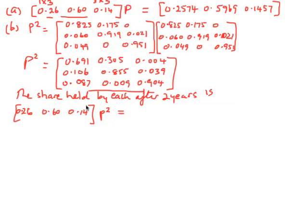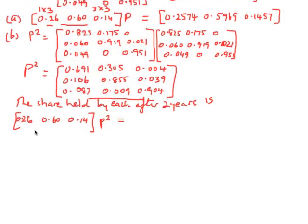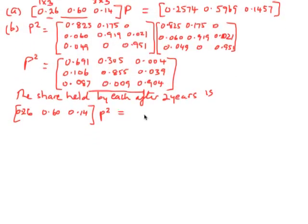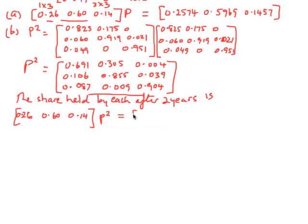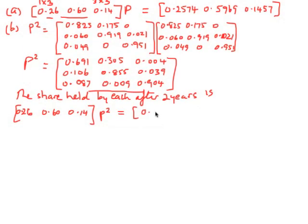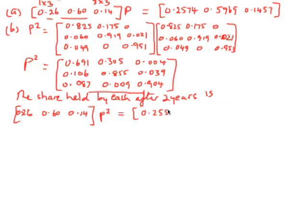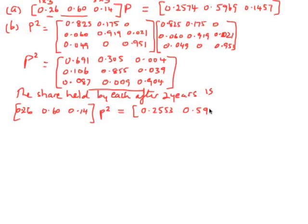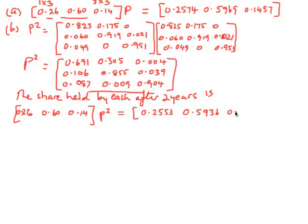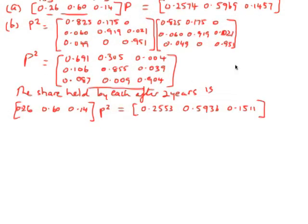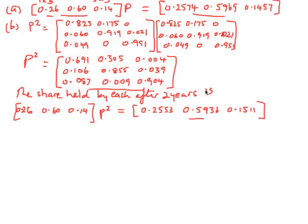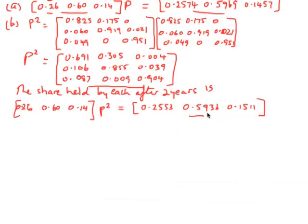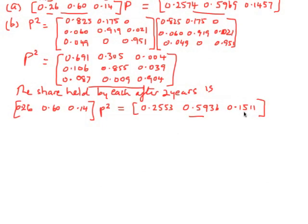Now we multiply by P squared. We do this row by each column to give us, again, a 1 by 3 matrix. When we do that, we end up with 0.2553, 0.5931, 0.1511. You can see this has not been a huge change after another year. Oil has dropped down slightly, gas has dropped slightly, and electric has come up slightly.